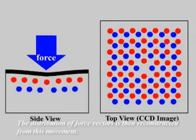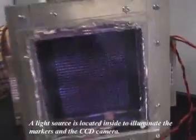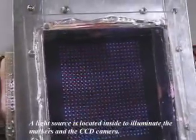The distribution of force vectors is then reconstructed from this movement. A light source is located inside to illuminate the markers and the CCD camera.